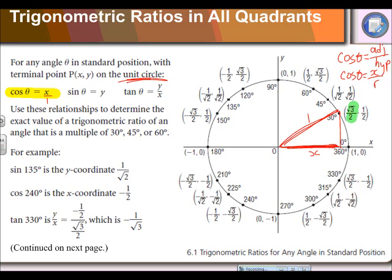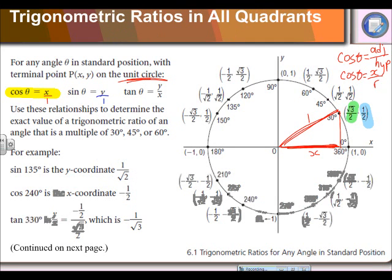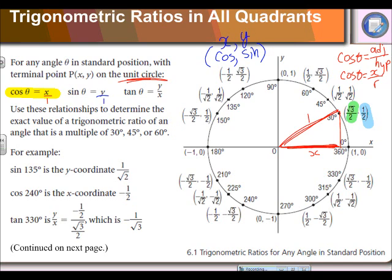Sine follows the same logic: opposite over hypotenuse = y/r = y/1 = y. So the sine is the y-coordinate of the unit circle. To remember: cosine comes before sine alphabetically, and x comes before y — so it's (cos, sin) = (x, y). For example, cos(240°): find 240 on the unit circle and look at the x-coordinate — it's −1/2. That's the exact value.